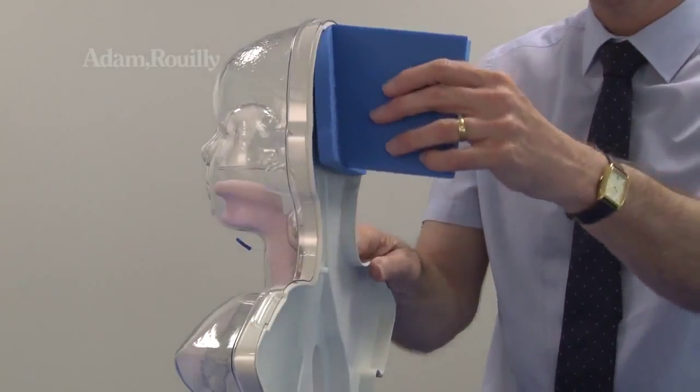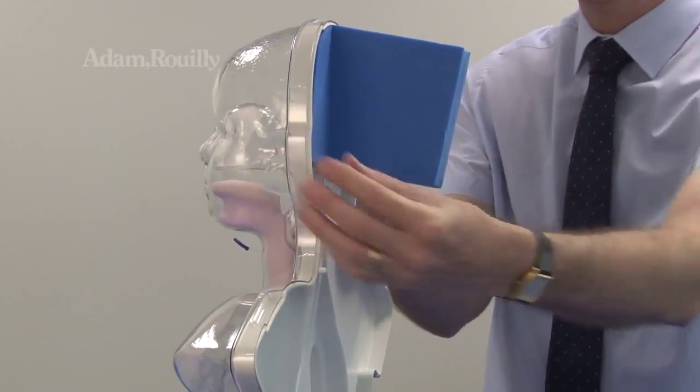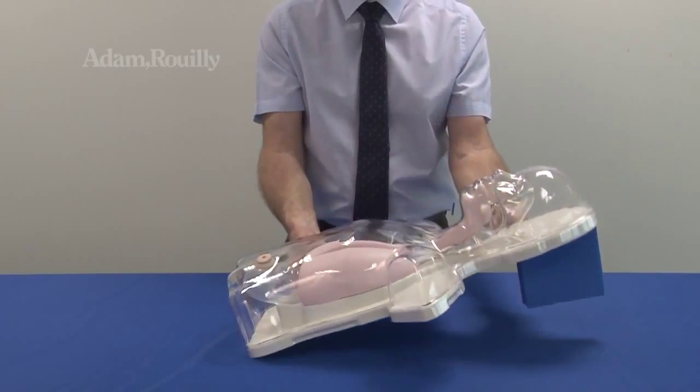To use the model in the supine position, insert the foam head support into the back of the model as shown.